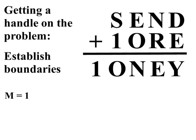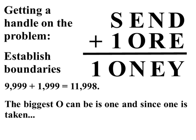The biggest four-digit number that starts with one is 1,999. If you add those two together, you get 11,998.